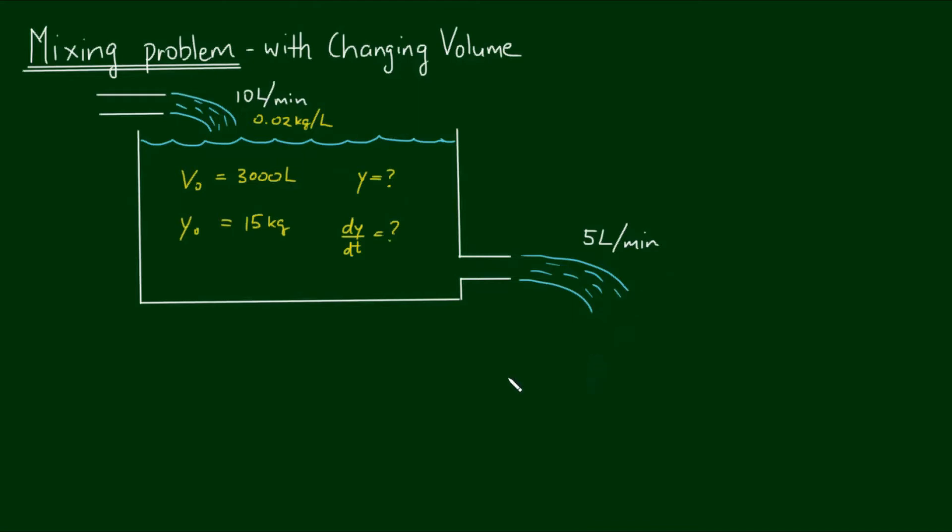So only 5 litres per minute of solution is now flowing out of the tank. So what that means over time, this tank is going to fill up and eventually overflow. But what we want to know is the quantity of salt there is at any time before it overflows. And to help us solve this problem, it is very similar process-wise. We're going to use first-order differential equations.